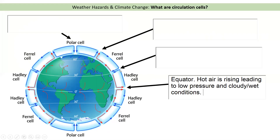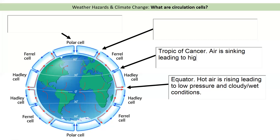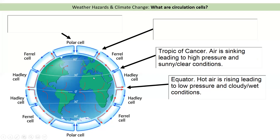If we move up to between the Hadley and the Ferrell cell, we need to remember that this line of latitude is called the Tropic of Cancer. Here the air is actually sinking, leading to high pressure and sunny, clear conditions. If you think about somewhere like Morocco, which is just over here, they often get very, very sunny conditions and very clear blue skies. So along the Tropic of Cancer, the air is sinking, leading to high pressure and sunny conditions.